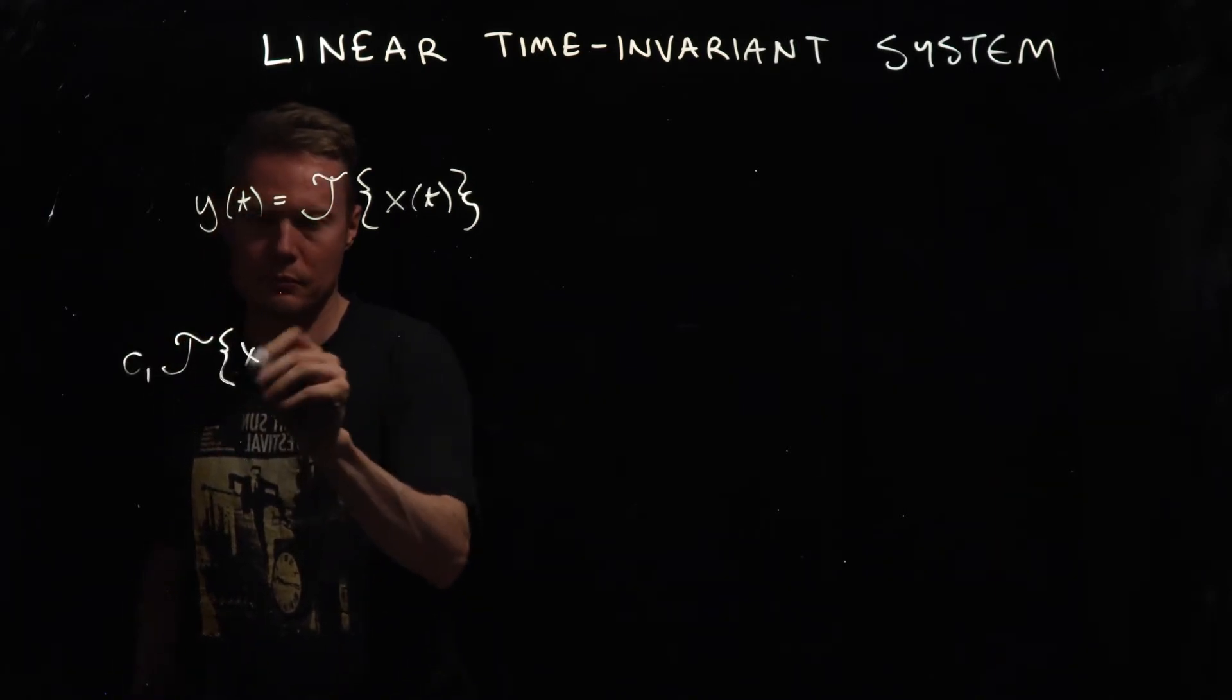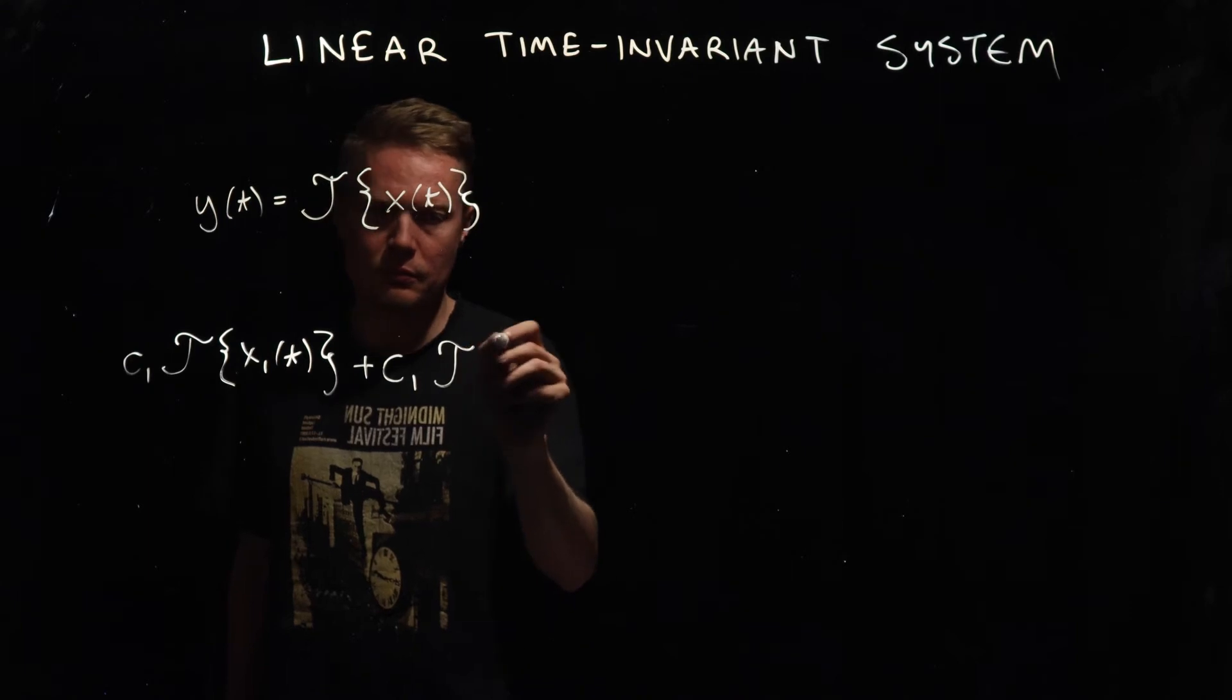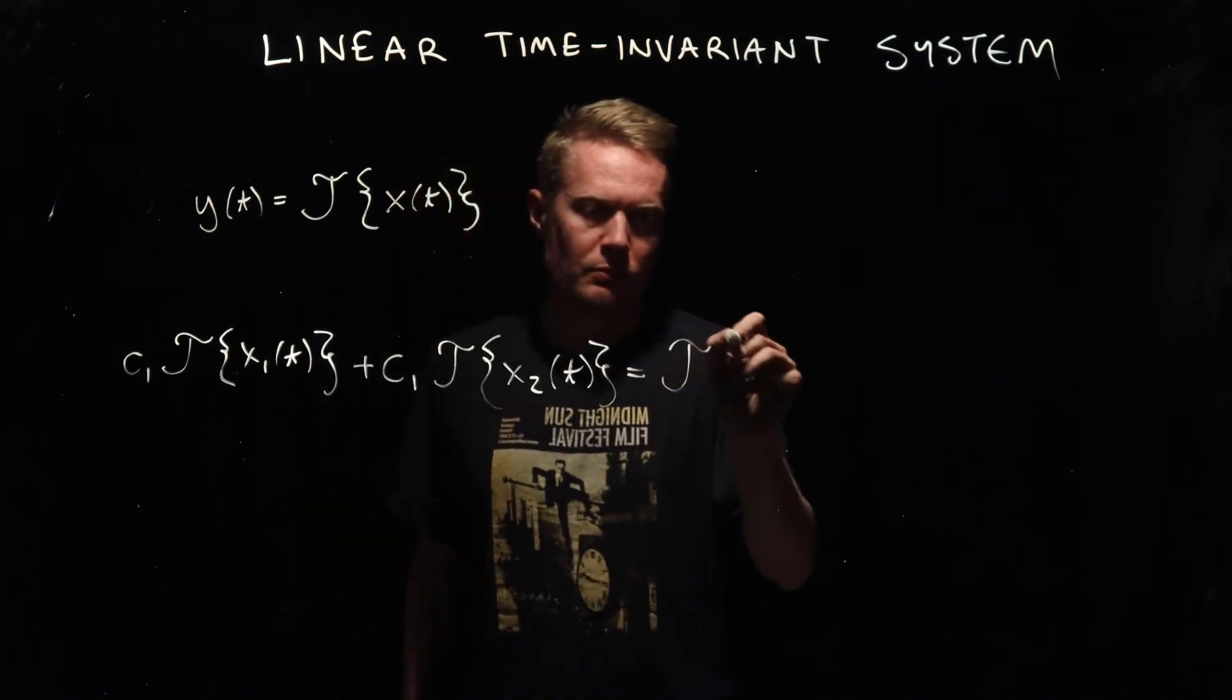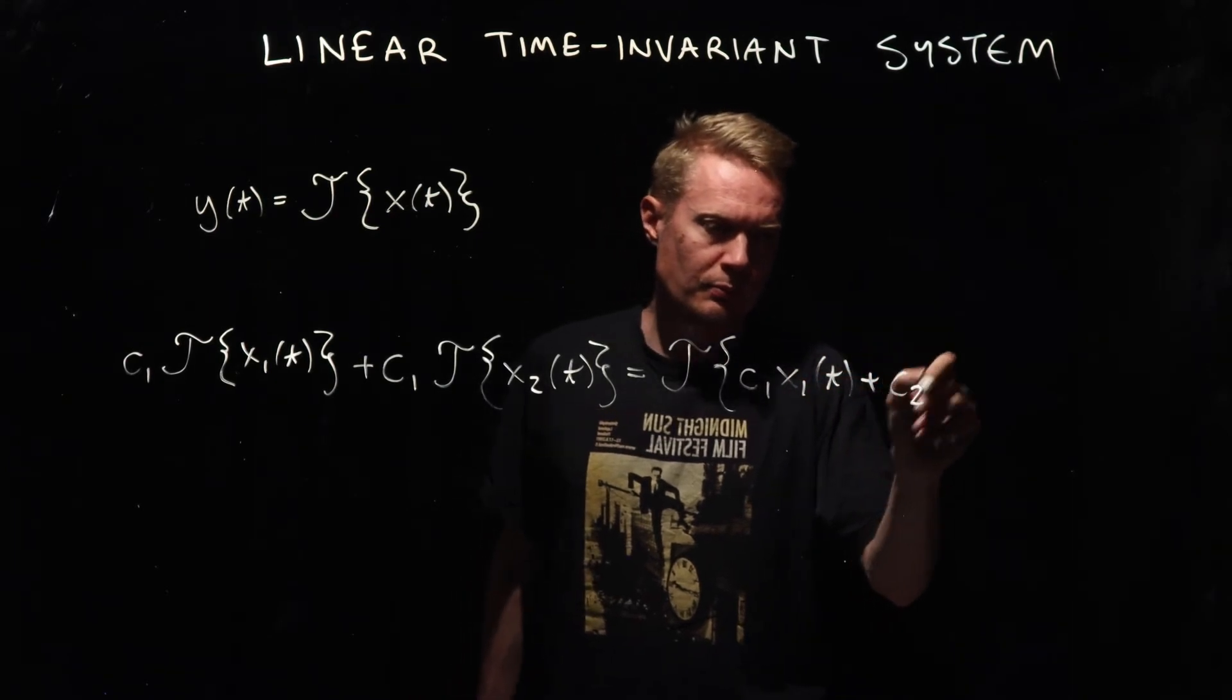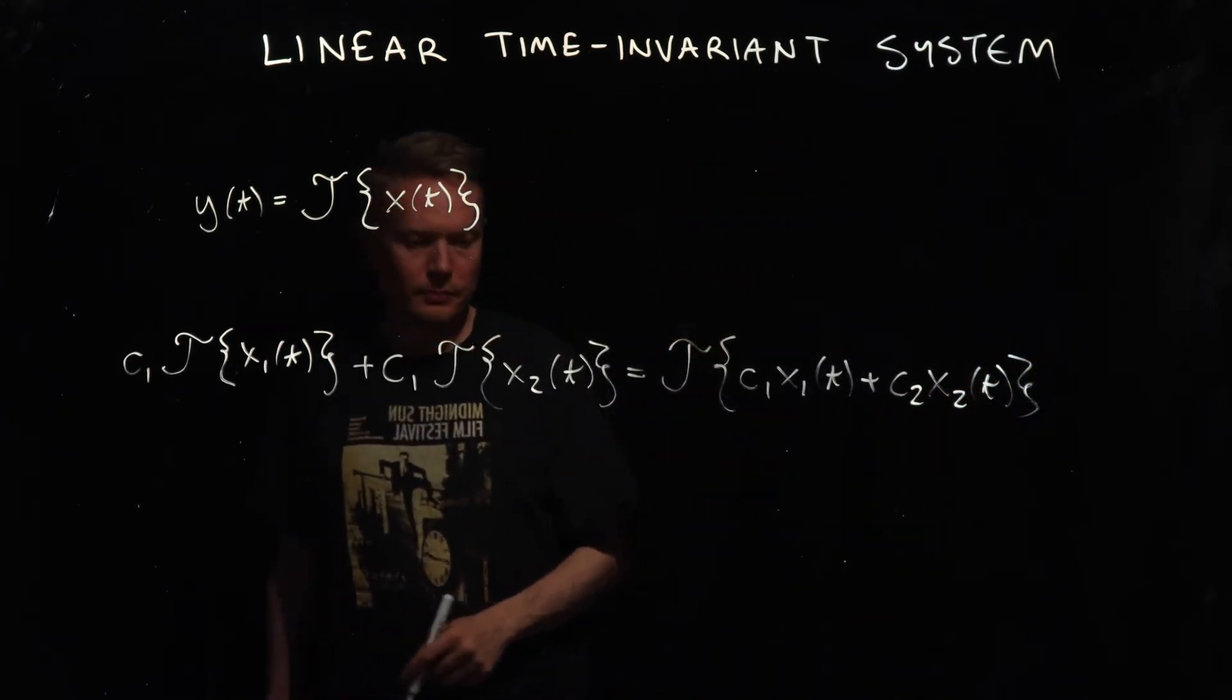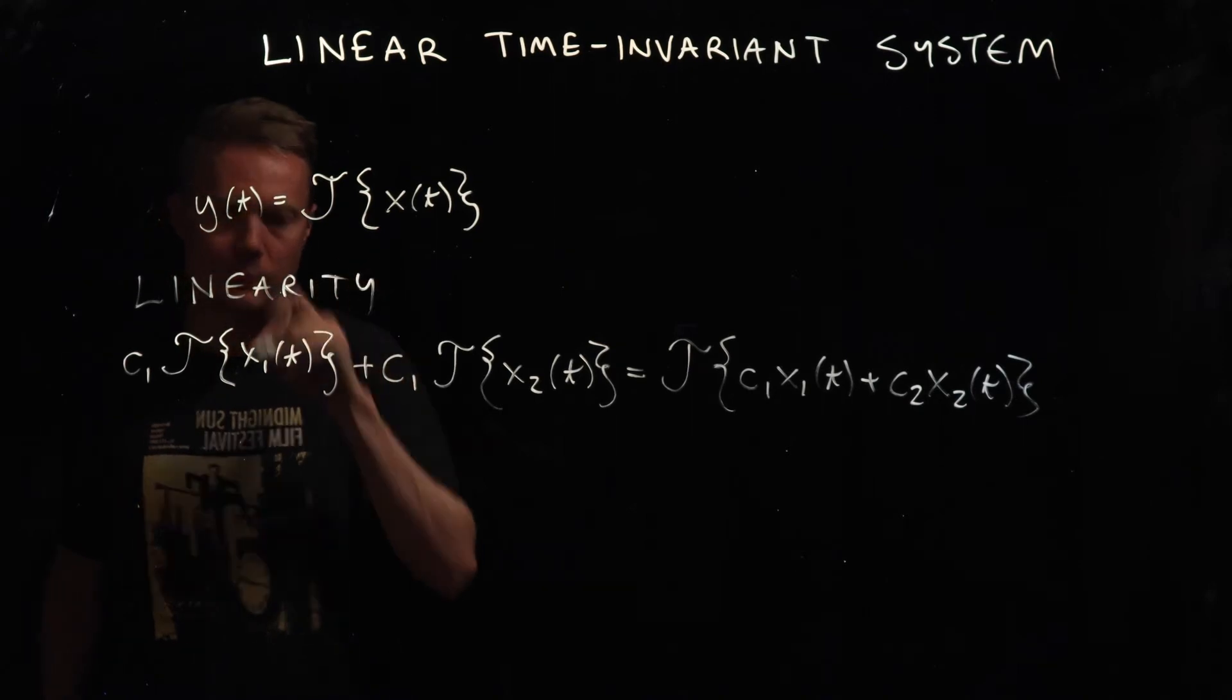A system is considered to be linear if a linear combination of inputs fed into the system yields the same as the linear combination of outputs. So on the left hand side we have a linear combination of outputs. By the way there's a little mistake there - the c1 associated with x2 should be c2. And on the right hand side we have the same linear combination of two inputs x1 and x2 fed into the system. In this case c1 and c2 are arbitrary constants. So that is the test of linearity.